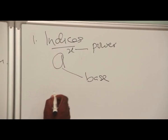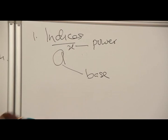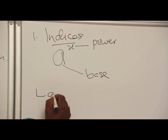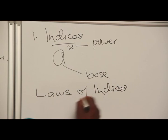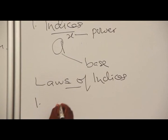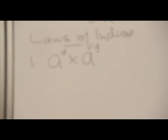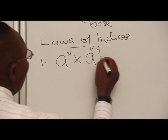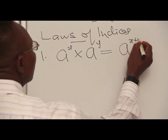There are operational rules guarding the operation of indices. Laws of indices. The laws of indices include: one, a raised to power x times a raised to power y. This is a multiplication law. And by this law, it translates to become a raised to power x plus y.